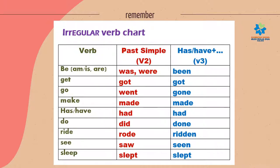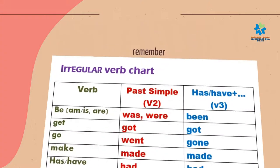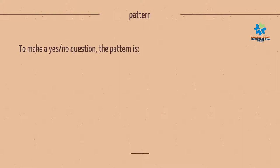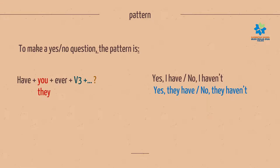Now, let's see the pattern. To make a yes-no question, the pattern is: Have you or they ever plus verb 3? And the answer? Yes, I have. No, I haven't. Yes, they have. No, they haven't.